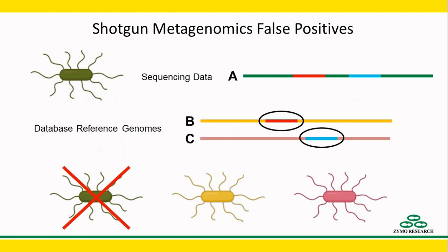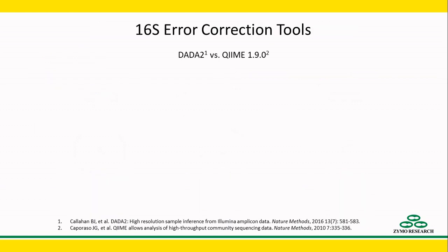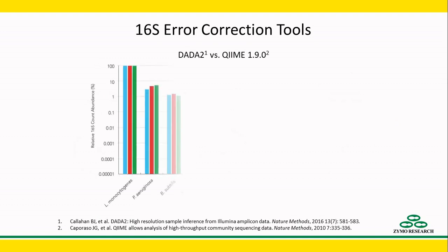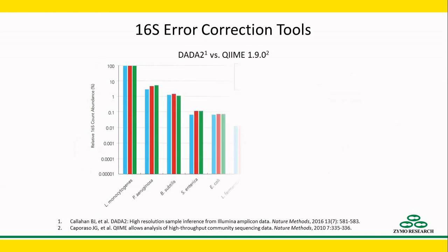Such an occurrence can happen with horizontal gene transfers, which is common between closely related microbes. 16S sequencing, on the other hand, has the advantage of error correction tools such as DADA2. This tool was compared to the OTU-based QIIME version 1.9.0.